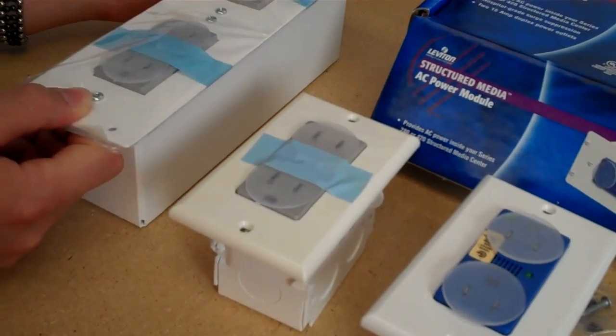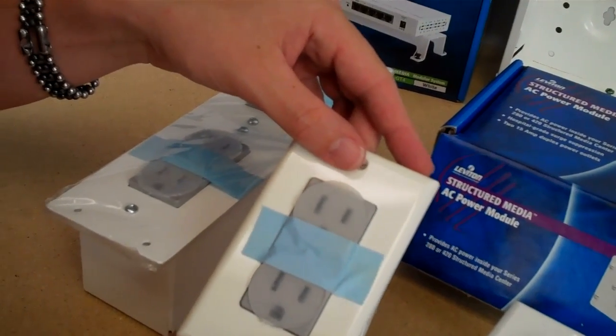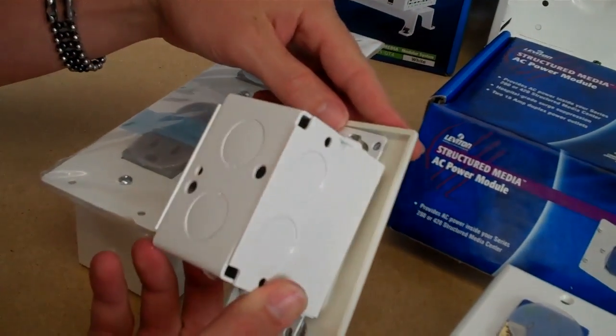We have another one, the J-Box, the single gang. Again, this mounts in the bottom panel, bottom of the panel.